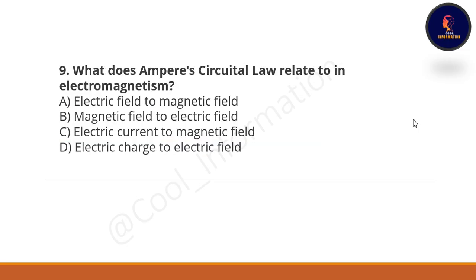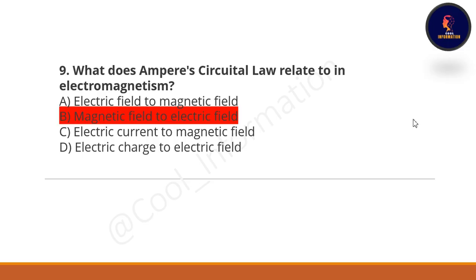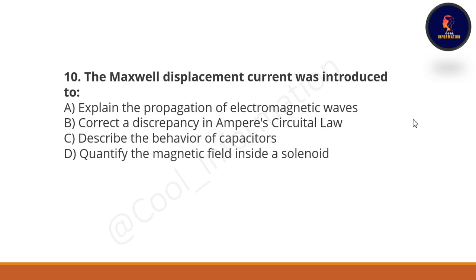Ninth question: what does Ampere's circuital law relate to in electromagnetism? Option A: electric field to magnetic field. Option B: magnetic field to electric field. Option C: electric current to magnetic field. Option D: electric charge to electric field. The correct option is B — magnetic field to electric field.